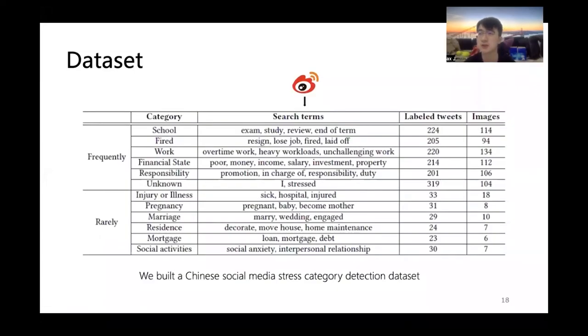To overcome the challenge of data, we build a Chinese social media stress category detection dataset. Weibo has become one of the most popular social media all over the world with 225 million daily active users. People can express their emotions, share their opinions, and record their life on Weibo. Therefore, Weibo was chosen to build our dataset. Based on psychological professional theory and stress category, we selected six categories that appear frequently on Weibo and six categories that appear rarely on Weibo. As shown in this table, a set of keywords for each selected category was defined based on the psychological classical theory, daily hassle stress event.